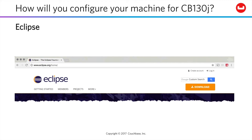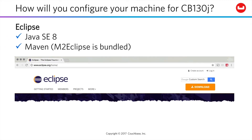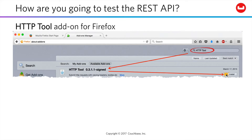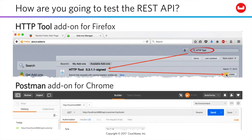We'll be using Eclipse for the demonstrations in this course, configured for Java SE8 and Maven. You can download Eclipse here if you wish, and of course you may be using other tools, such as IntelliJ IDEA, and you can do file conversion as needed from Eclipse. For REST API testing, you could use the HTTP tool add-on for Firefox, or maybe Postman for Chrome. Our demonstrations in the videos will use HTTP tool.